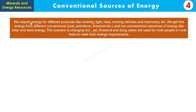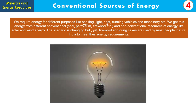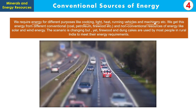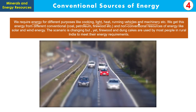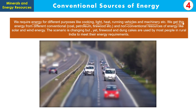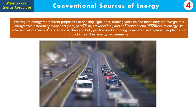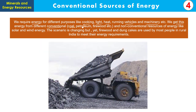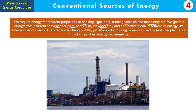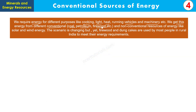All our activities require energy for different purposes, such as cooking, light, heat, running vehicles, or running machinery. We get this energy mainly from two sources: conventional sources, which include coal, petroleum, and firewood — resources we have been using for a long time — and non-conventional sources, which are newer, like solar energy and wind energy.